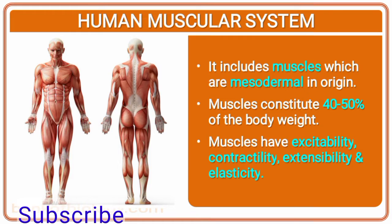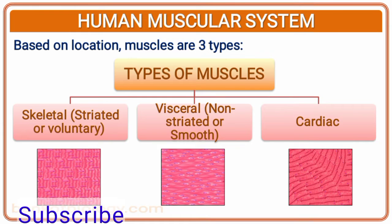Based on location, muscles are of three types. Skeletal muscles are striated or voluntary, whereas visceral muscles are non-striated or smooth, and cardiac muscles are present in the heart. Cardiac muscles are also involuntary. Visceral or smooth muscles are also involuntary, found in the stomach and organs, whereas skeletal muscles are voluntary in action.